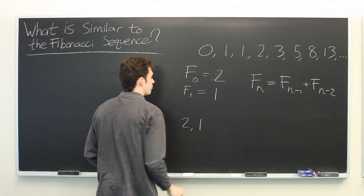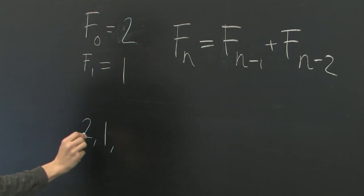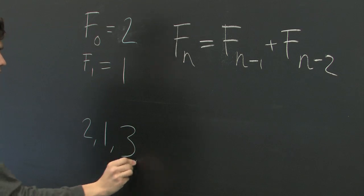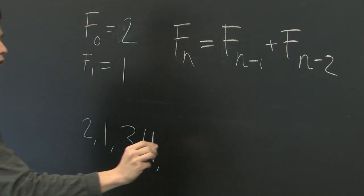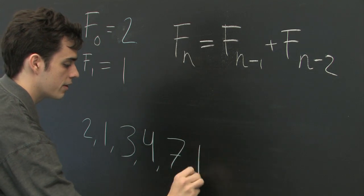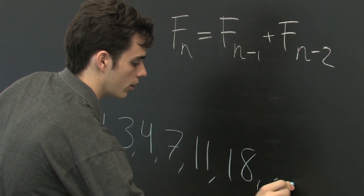2, 1, and then we simply follow our recursive step as before. 1 plus 2 is 3, 3 plus 1 is 4, 4 plus 3 is 7, 11, 18, and so on and so forth.